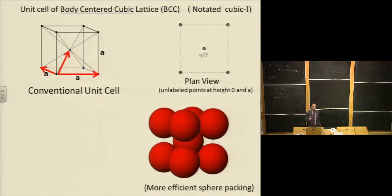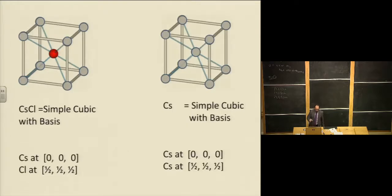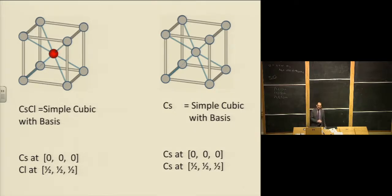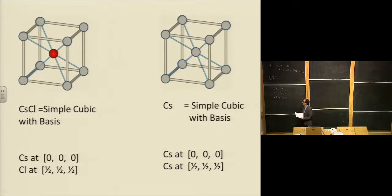A warning that everyone should take: do not make the mistake of calling cesium chloride a body-centered cubic lattice. The rule of a lattice is that every lattice point should look identical. There is a point in the middle of the body, but it's not identical to the corner points, so it's not a BCC lattice. It's a simple cubic lattice with a basis having two inequivalent atoms: cesium at (0,0,0) and chlorine at (1/2,1/2,1/2). Pure cesium, where cesium occupies all points including the center, is a BCC lattice.